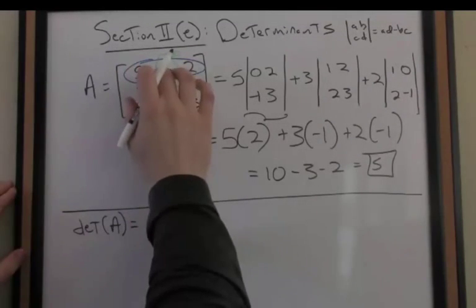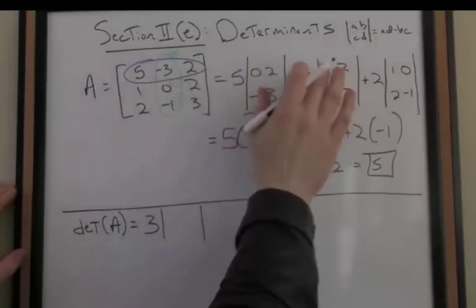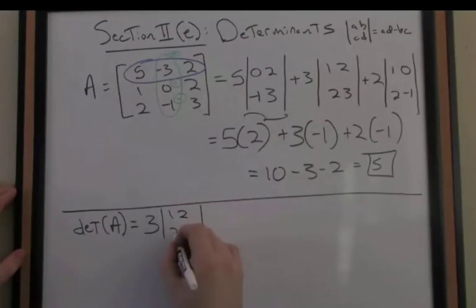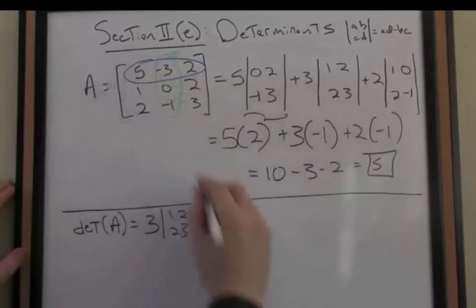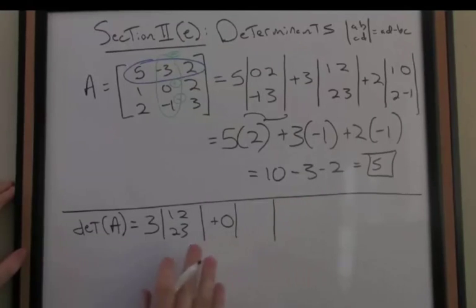So I have negative negative 3, which is positive 3, times the determinant of the submatrix, it's the same as it was before, so 1, 2, 2, 3. Now I alternate sign plus 0. I'll just leave this as a placeholder so we can see it, plus 0, of course, that'll go away.